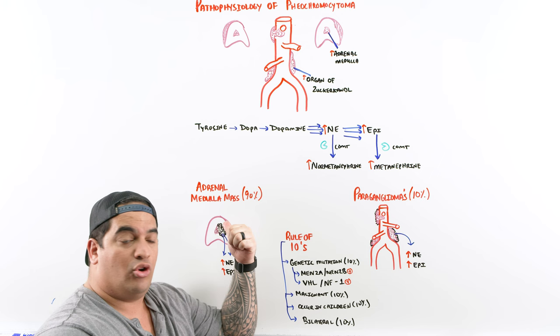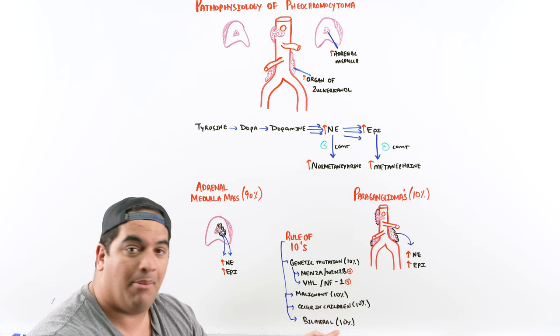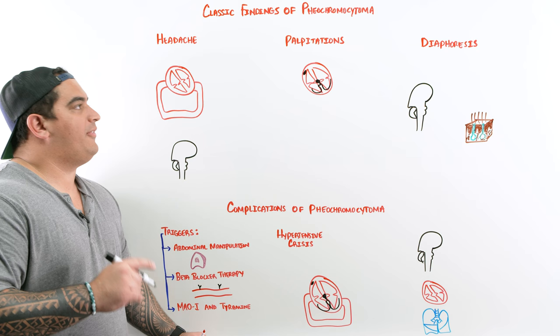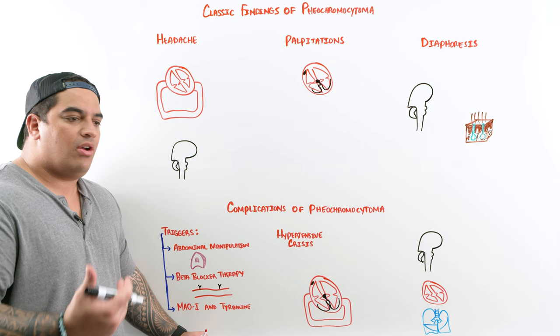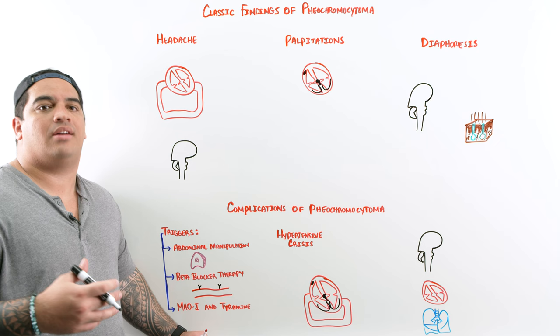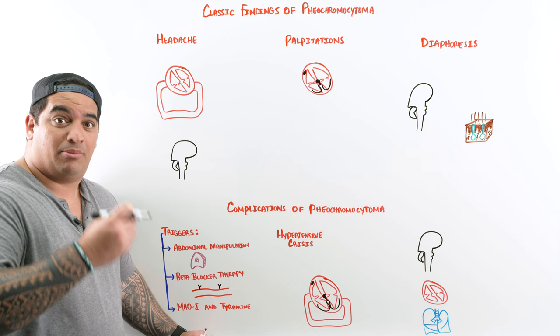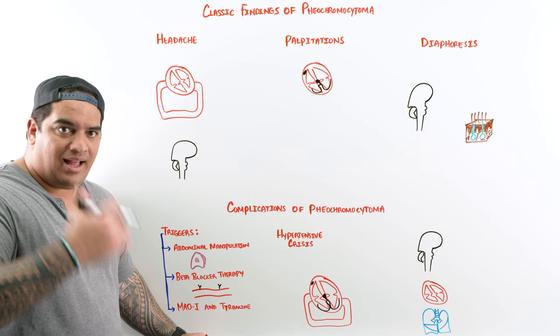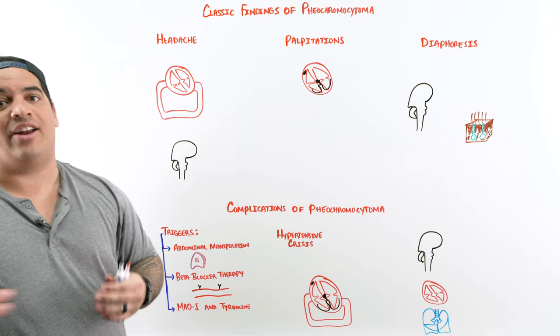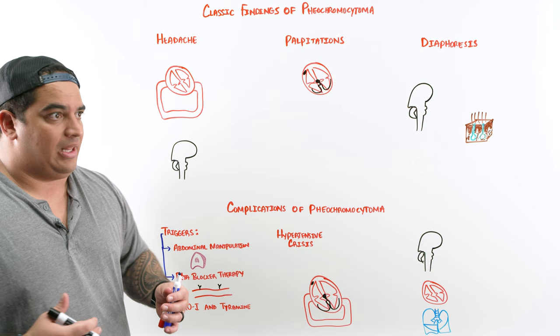Now that we've covered that pheochromocytoma involves a massive increase in catecholamines due to an adrenal medulla tumor or paraganglioma, let's talk about the devastating effects of high catecholamine levels. There is a classic triad of presentation: headaches, palpitations, and diaphoresis. It's not constant — it's usually intermittent and paroxysmal. There are certain triggers we'll discuss, but these three are the most common clinical manifestations.